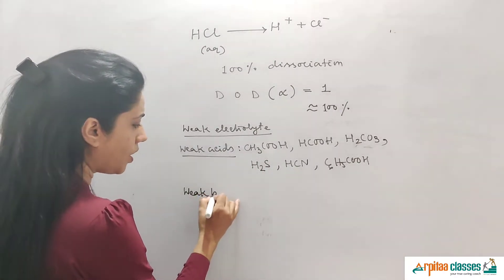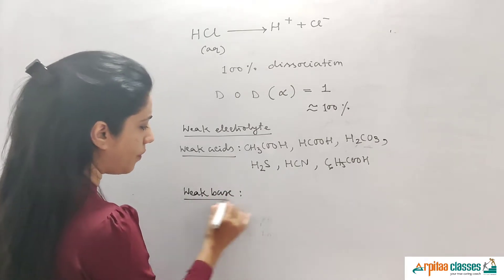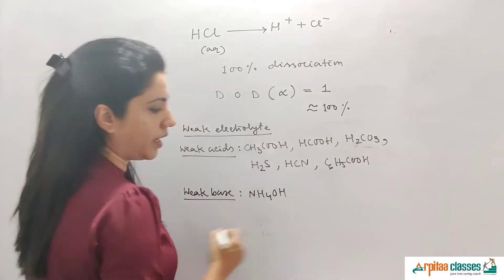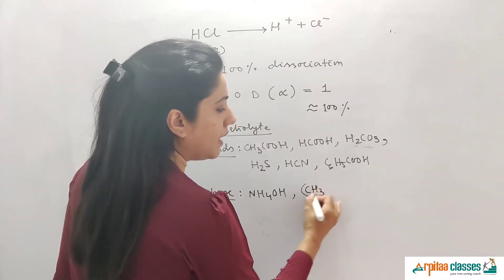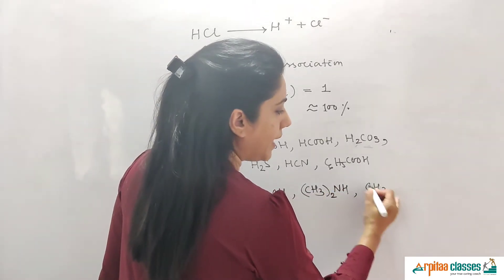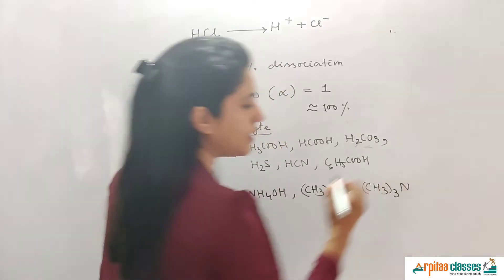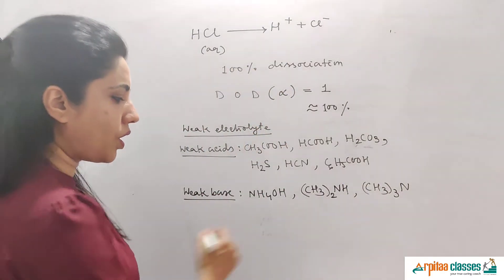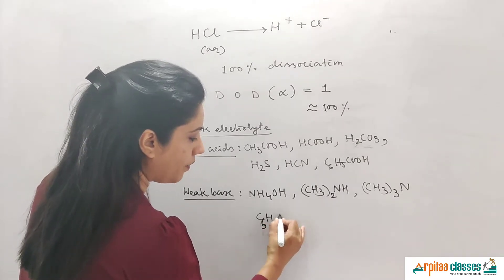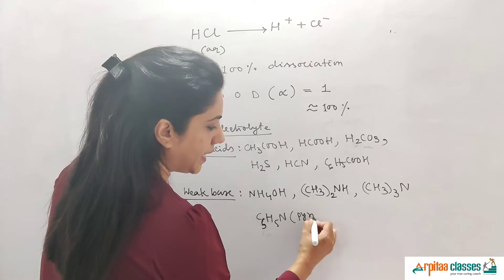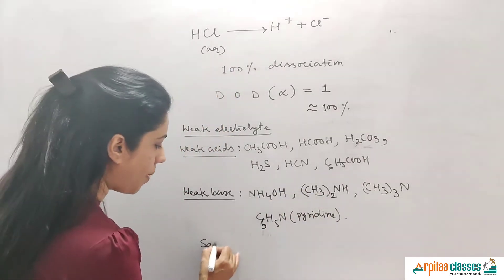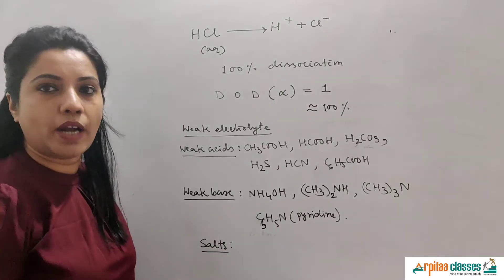Weak bases are also weak electrolytes. For example, NH4OH is a weak electrolyte. Dimethylamine is a weak electrolyte. Trimethylamine is a weak base and weak electrolyte. Pyridine (C5H5N) is also a weak electrolyte. In the case of salts, if both components are weak, then the salt is a weak electrolyte.